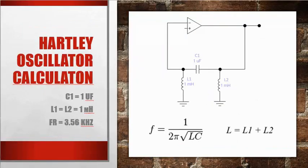Hartley oscillator calculation. If we do C1 is 1 microfarad and L1 equals L2 is 1 millihenry, what we'll find out is that L total that we'll use is 2 millihenry times 1 microfarad, take square root times 2 pi, and take one over all of that mass, we end up with 3.56 kilohertz.